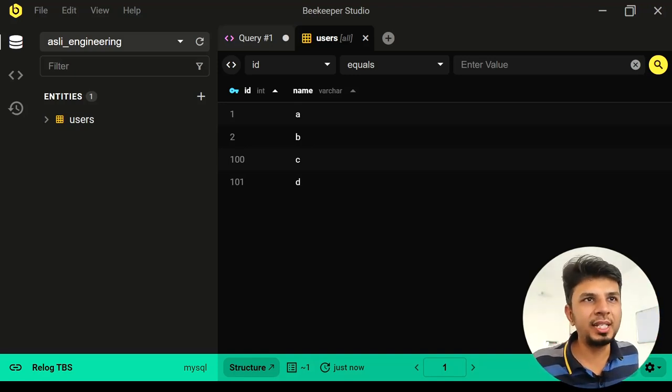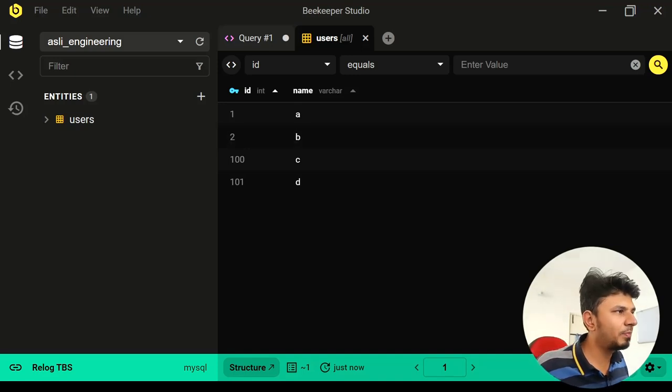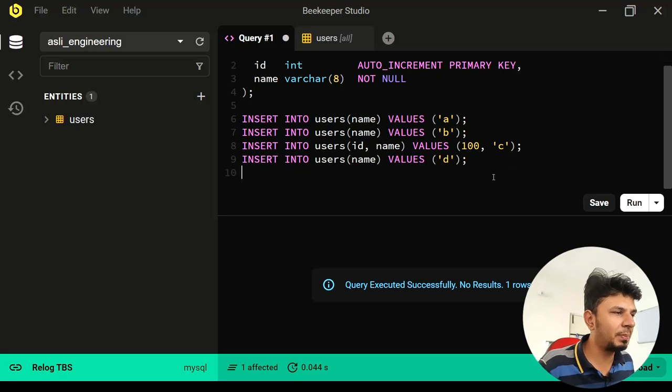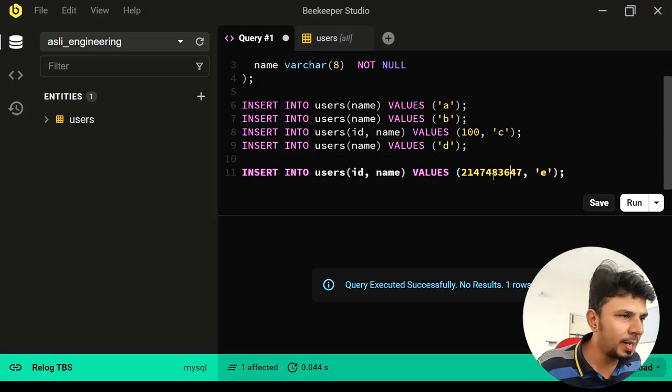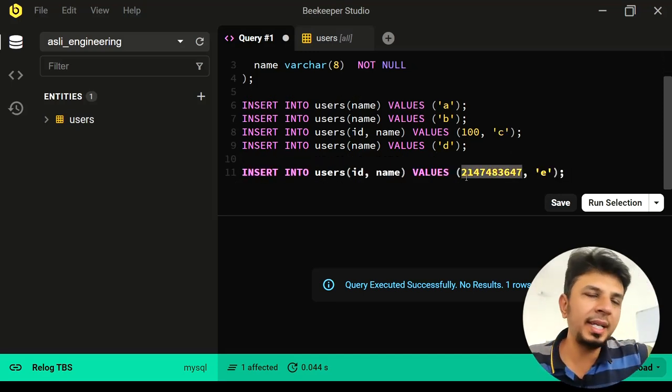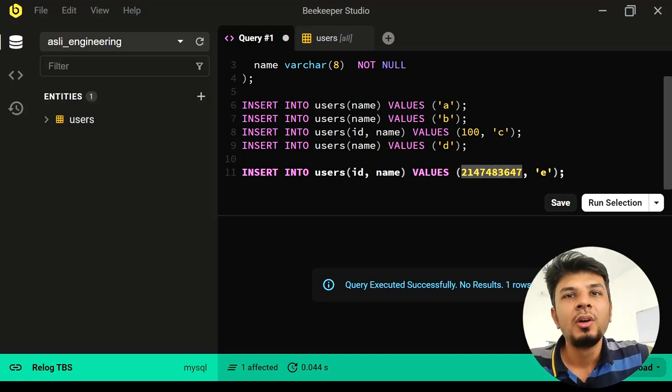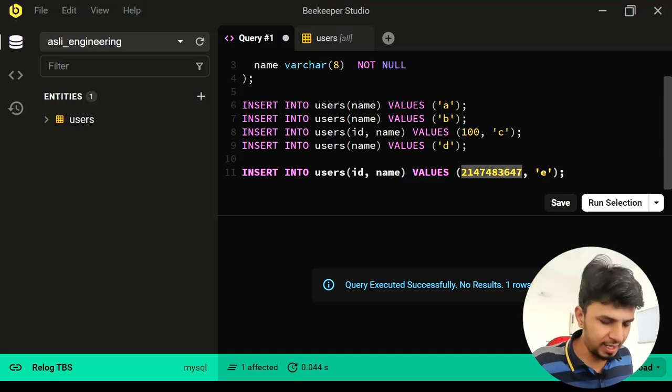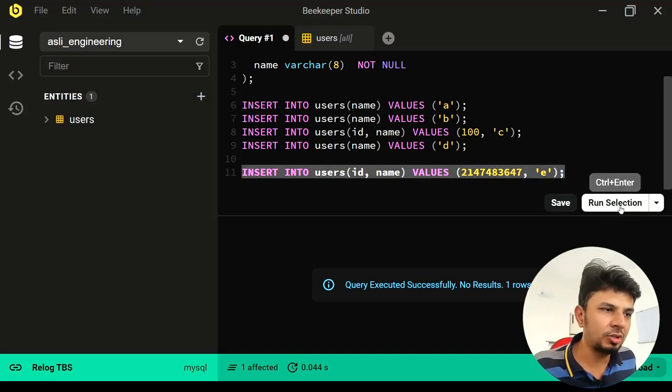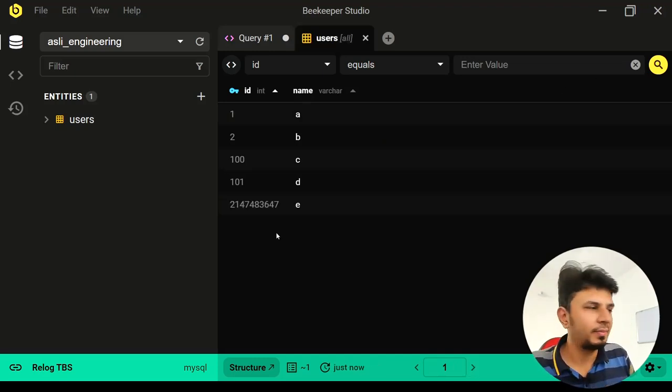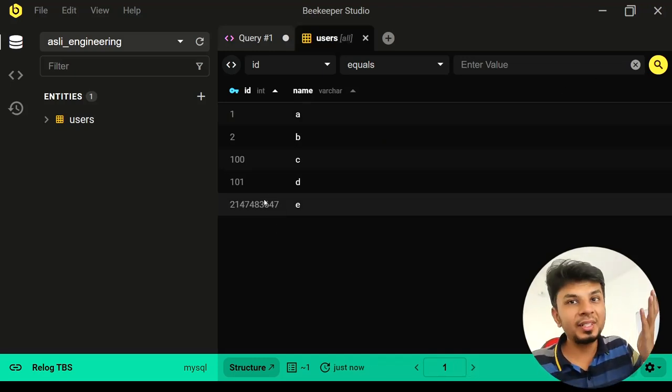Now that we know that this is there, let's insert the maximum possible integer value into this. So the maximum possible integer value is 2,147,483,647. So 2 raised to power 31 minus 1. Now if I insert this, the row should be inserted and it did. If I check the output, the row is inserted with this humongous ID, which is the cap.